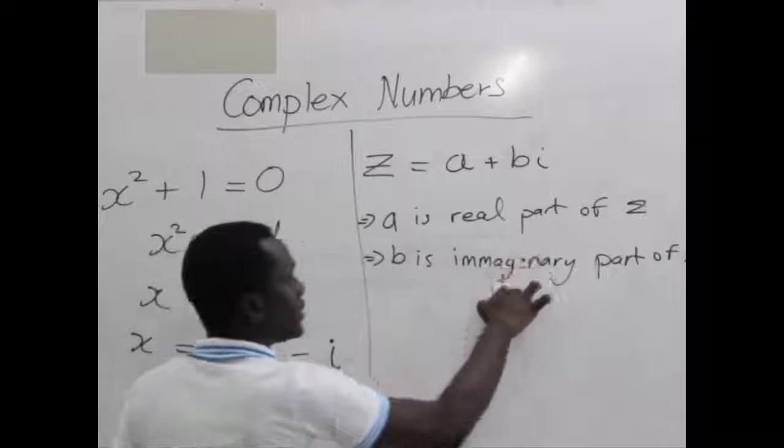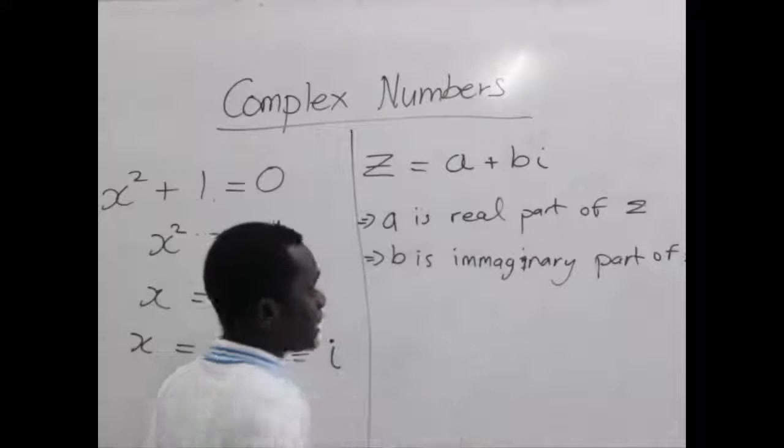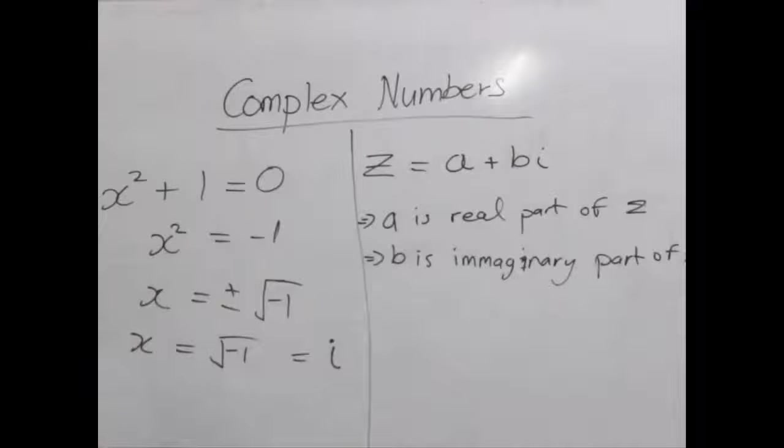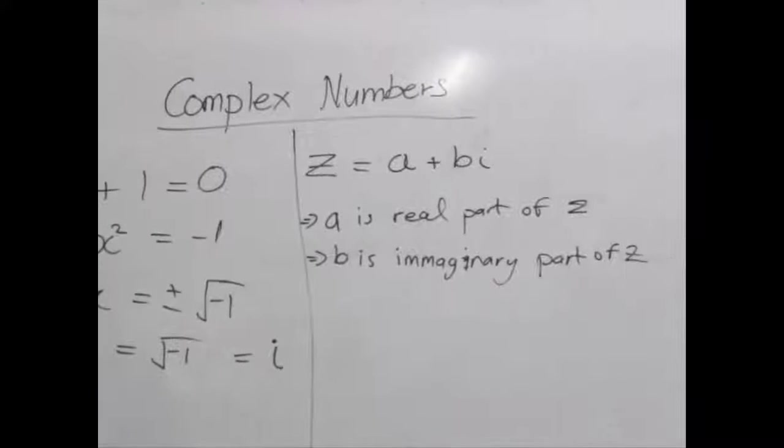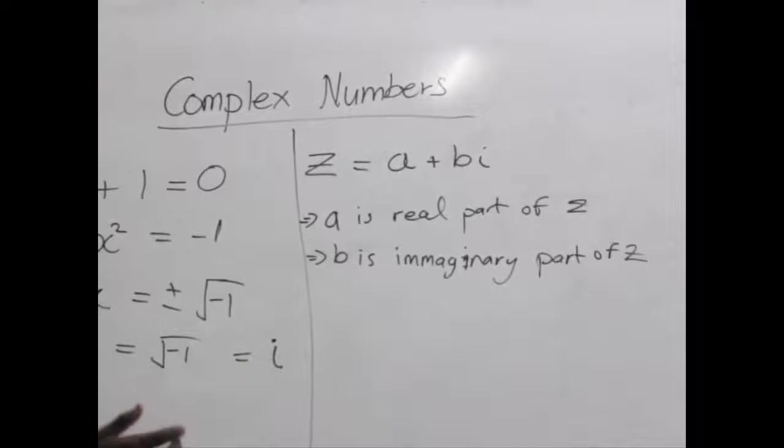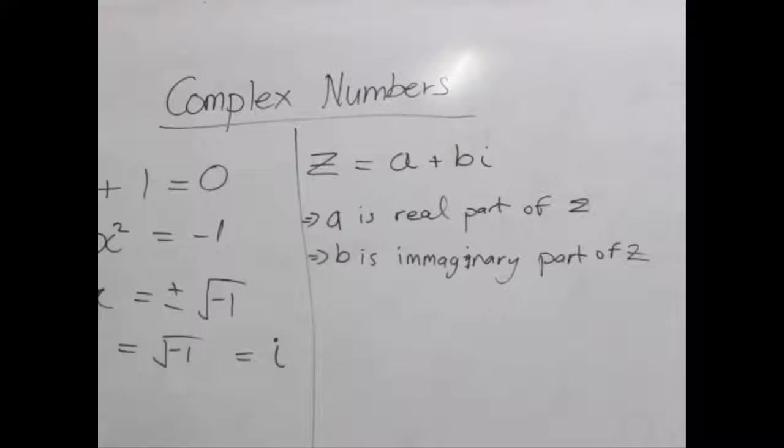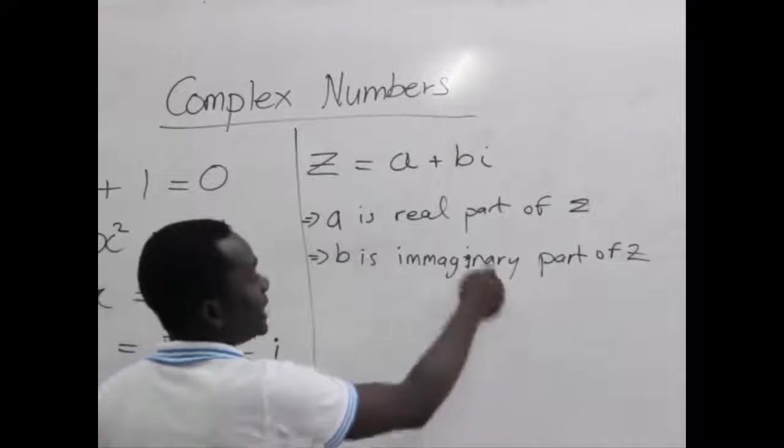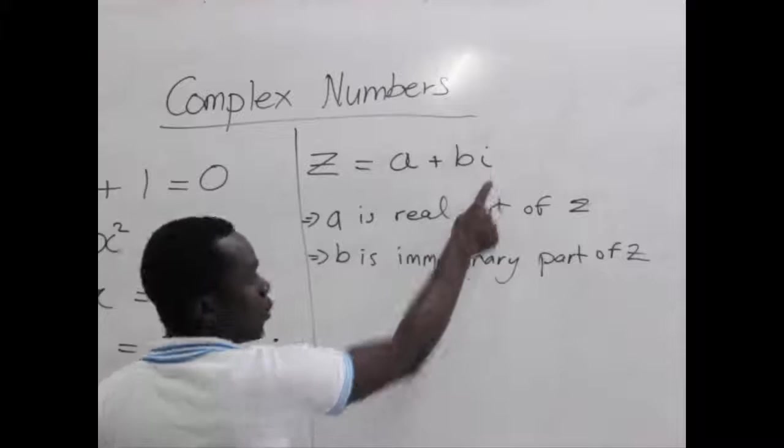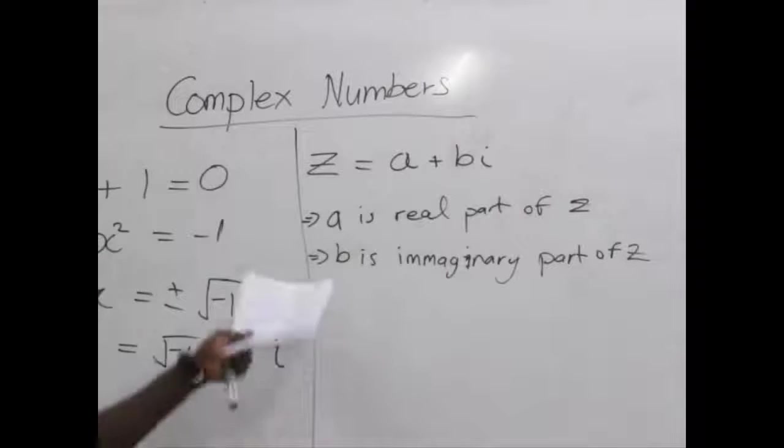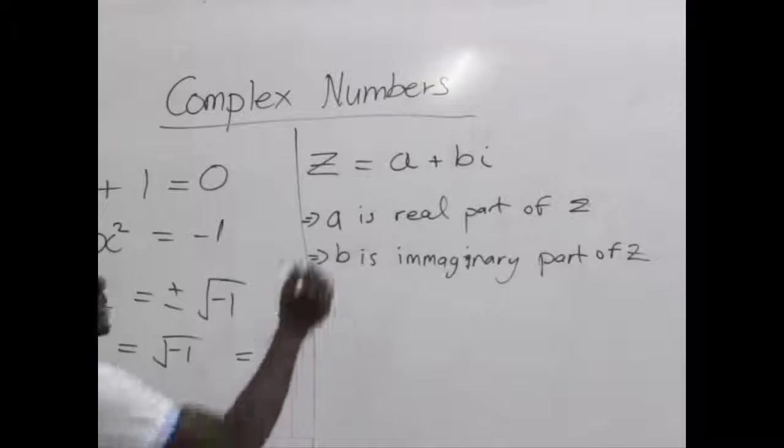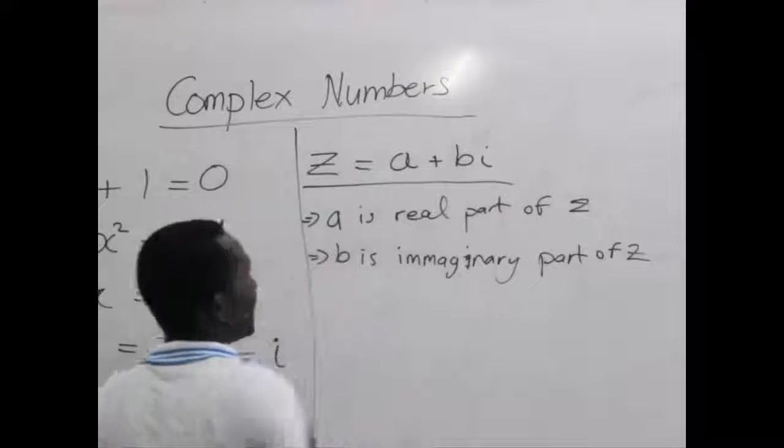This means that every complex number has a real part which exists in our real number system, and a complex part which we can only imagine, which we call the imaginary part, and is always moving towards the i part. So that's how we can denote a complex number z.